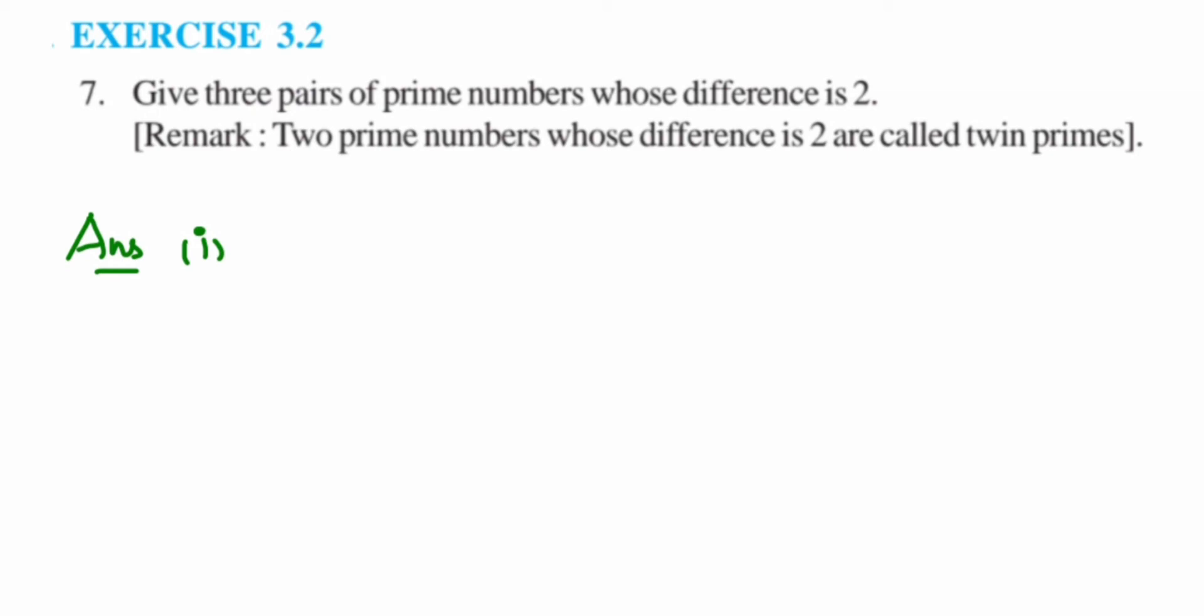So 3 and 5. The second is 5 and 7. The difference between 5 and 7 is also 2, like 5 minus 3 is equal to 2, and 7 minus 5 is also equal to 2, where 7 and 5 are prime numbers.